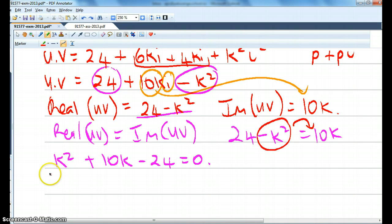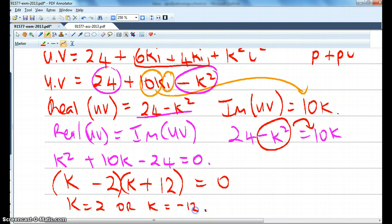Now I've got to factorise that. So I should be able to do that really easily. 2 things that multiply to 24. So 12 times 2. And the difference is, that's going to be minus, that's going to be plus. Let me check. k squared minus 2k plus 12k is my 10k. Correct. So k equals 2 or k equals negative 12.